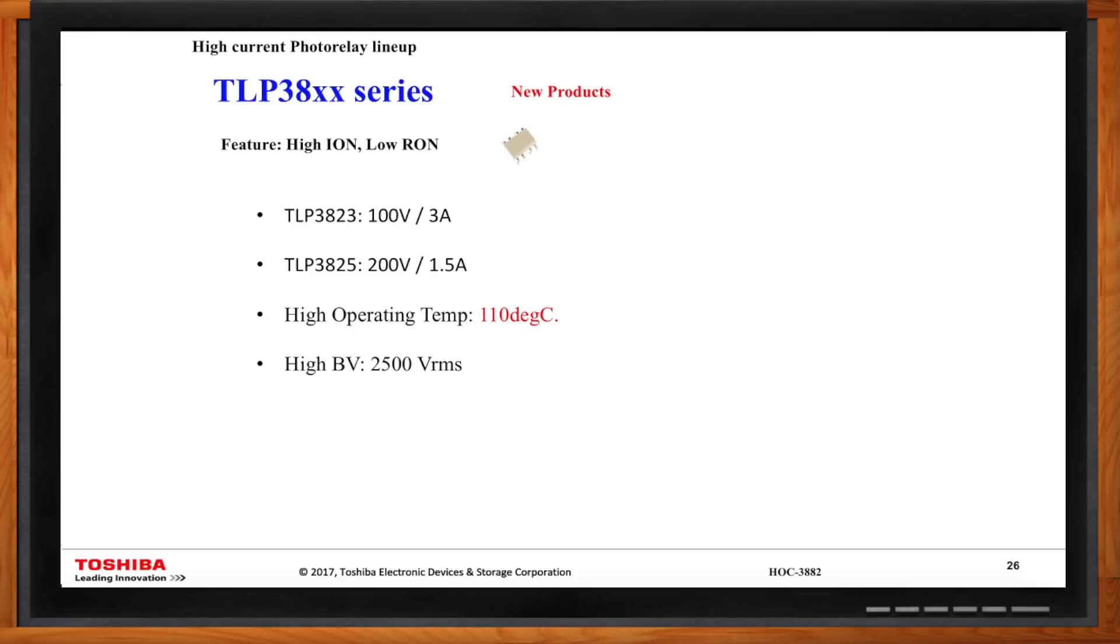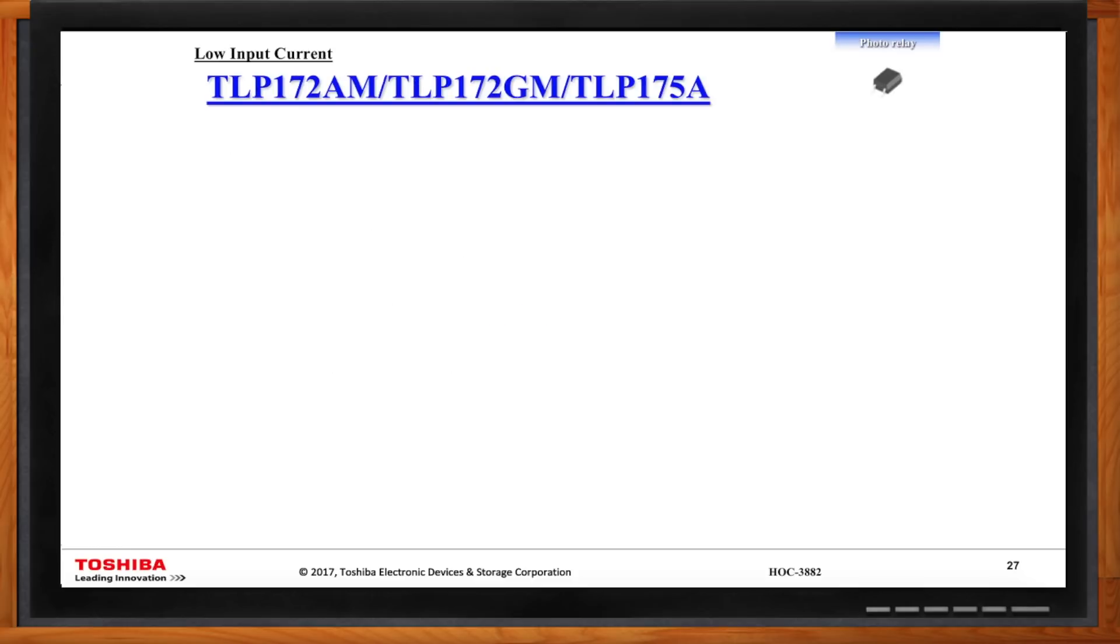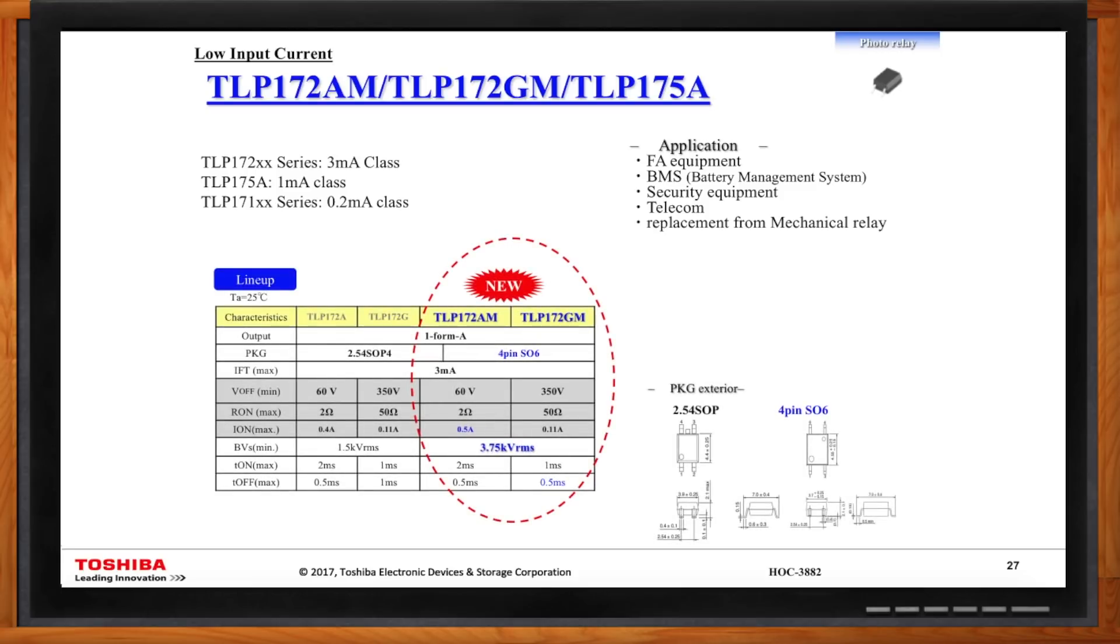Okay, so sometimes I also have very low input current. Are there photo relays that can handle that? Yeah, absolutely. We mentioned before, especially for security type of application, low input current is important. We have several families, the TLP172 and the 175 series family, specifically address low input current. We go from 3 milliamp class all the way down to 0.2 milliamp class, and all of these parts are in production today.